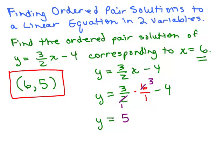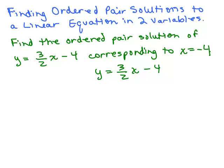Let's try it corresponding to some other number. This time find the ordered pair solution of y equals 3 halves x minus 4 corresponding to x equals negative 4. So again, we're given the x coordinate of the ordered pair. For the x coordinate we're going to put in negative 4 and we're trying to find the y value. So we're going to plug in negative 4 for the x value.